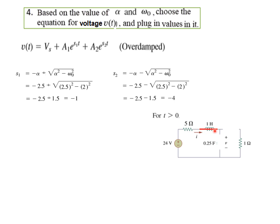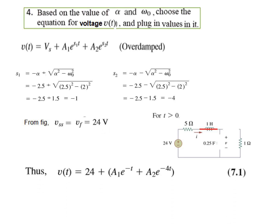For T much greater than 0, the inductor is a short circuit and the capacitor is an open circuit. So we have to see what is V_ss — the final value to which the capacitor is charged. Since there is an open circuit, the 24 volt source will charge the capacitor, meaning Vs is 24 volt. Now we plug all values into the equation: 24 plus A1 times e raised to minus t, plus A2 times e raised to minus 4t. The unknowns A1 and A2 remain to be found.